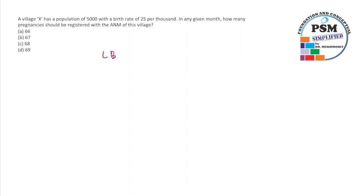Live births is given by the crude birth rate of the area divided by a thousand, into the population. That's a pretty straightforward formula which you need to remember by heart.